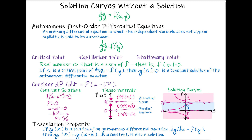One thing to note: if we drew a direction field for our autonomous differential equation, all of the slopes across a horizontal line on the slope field would be the same. And if you look vertically down a line on the direction field, all of the slopes will likely be changing along the way. This gives you a really good idea of the shape of the graph just from a single vertical line in that direction field.